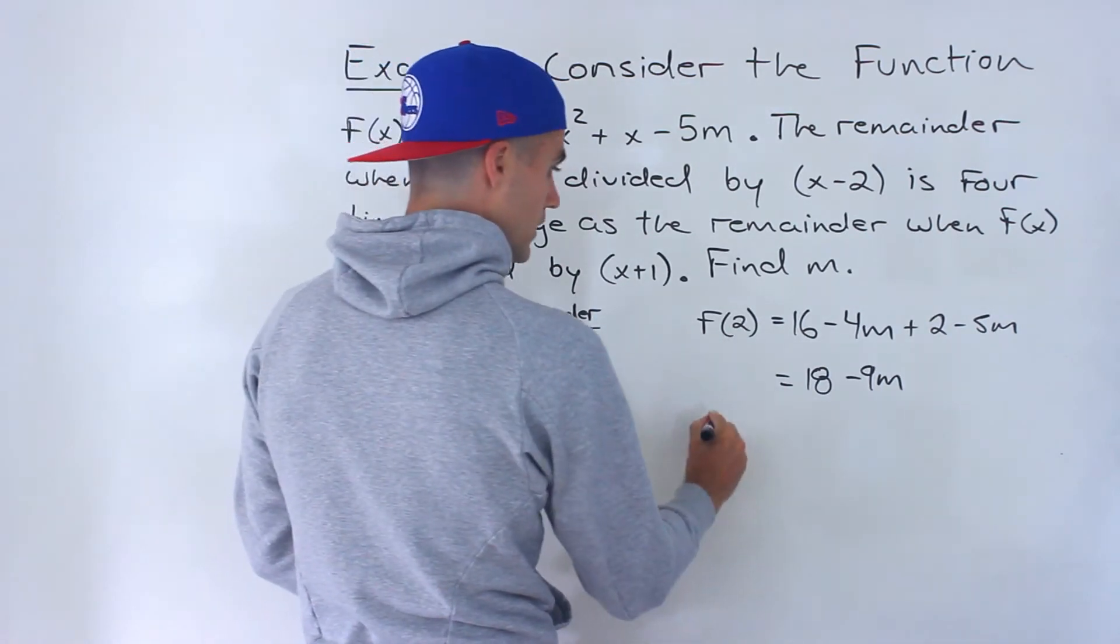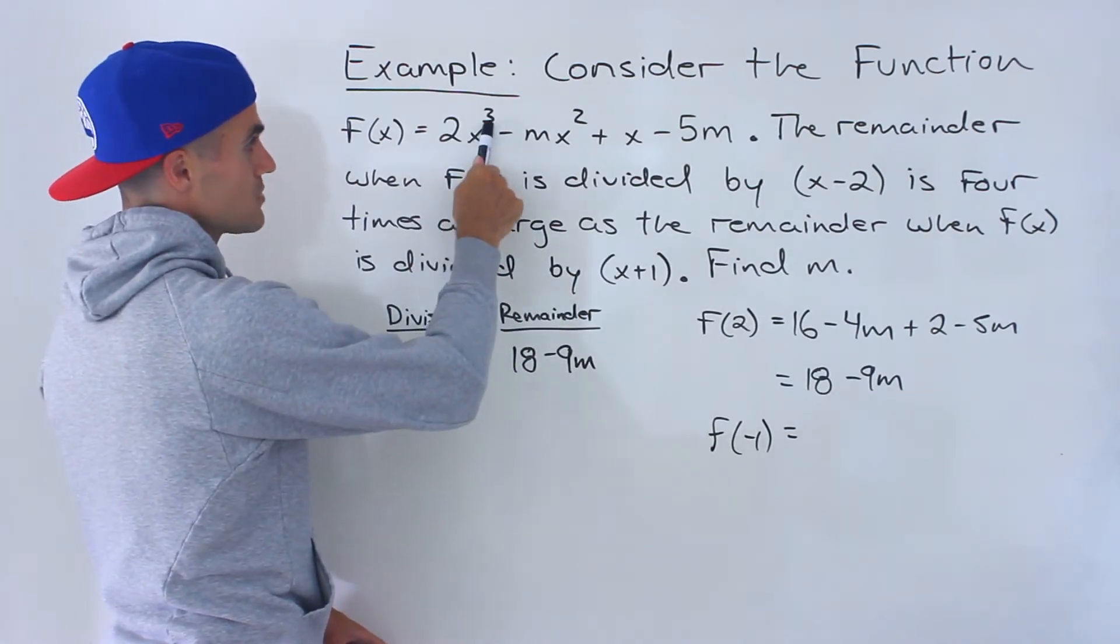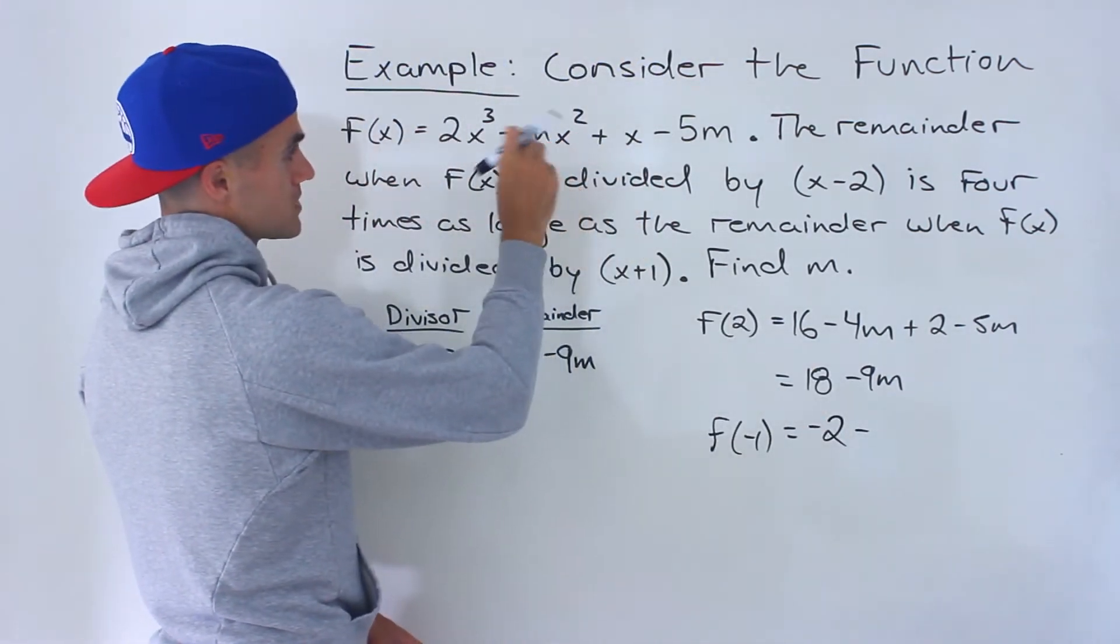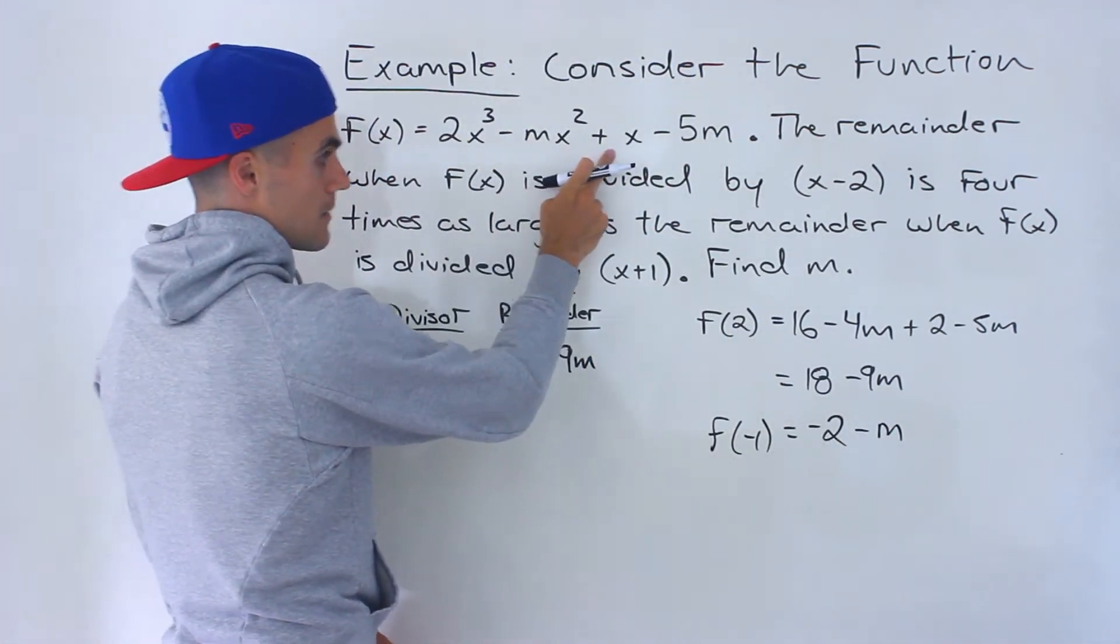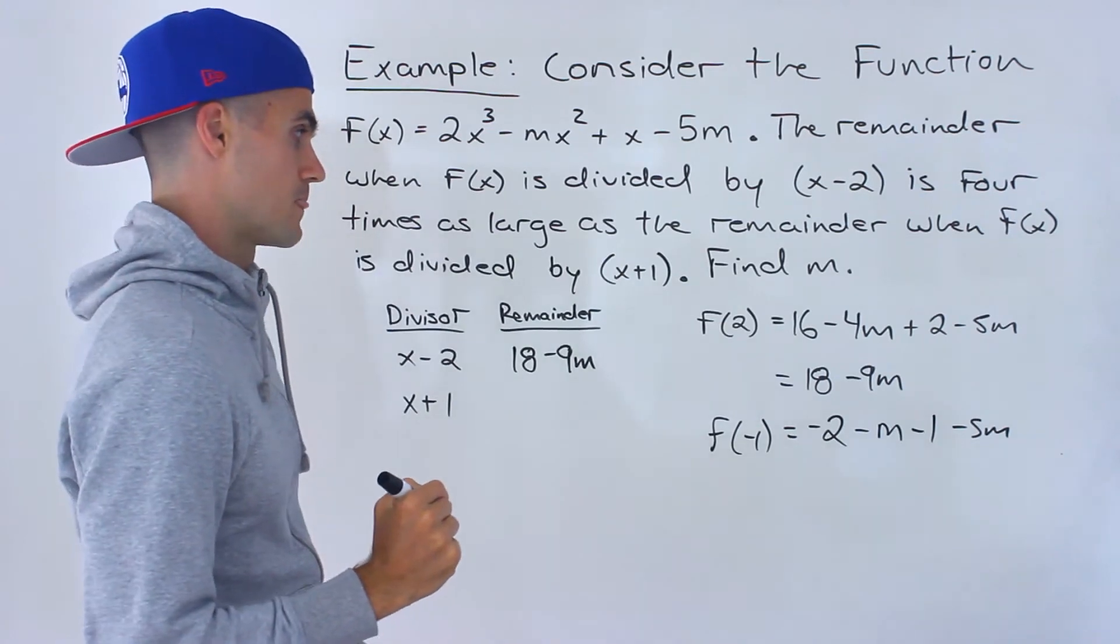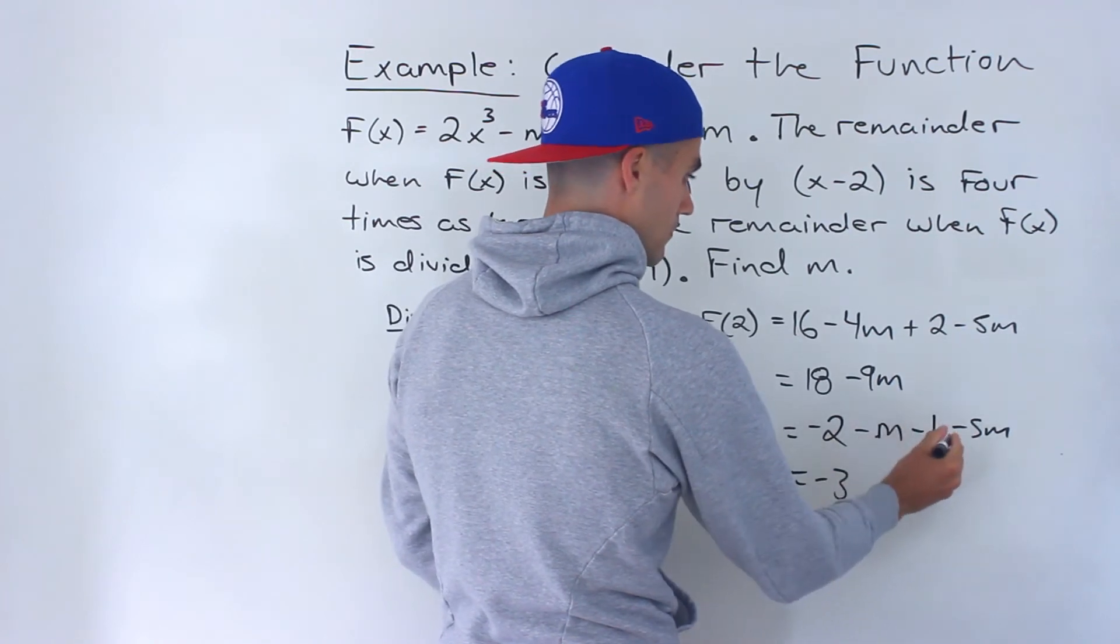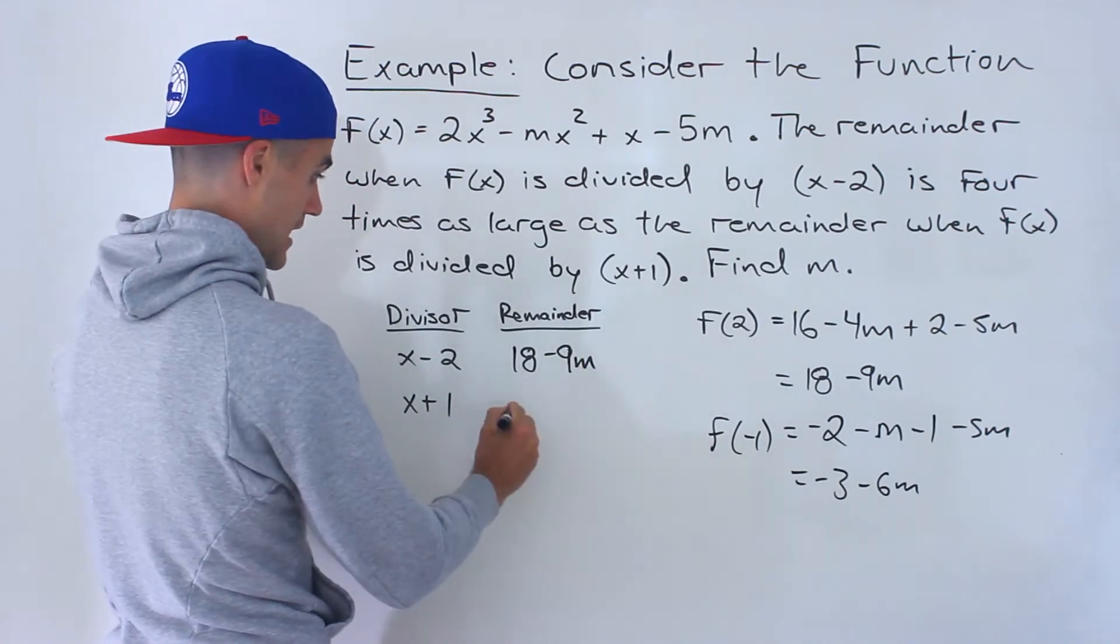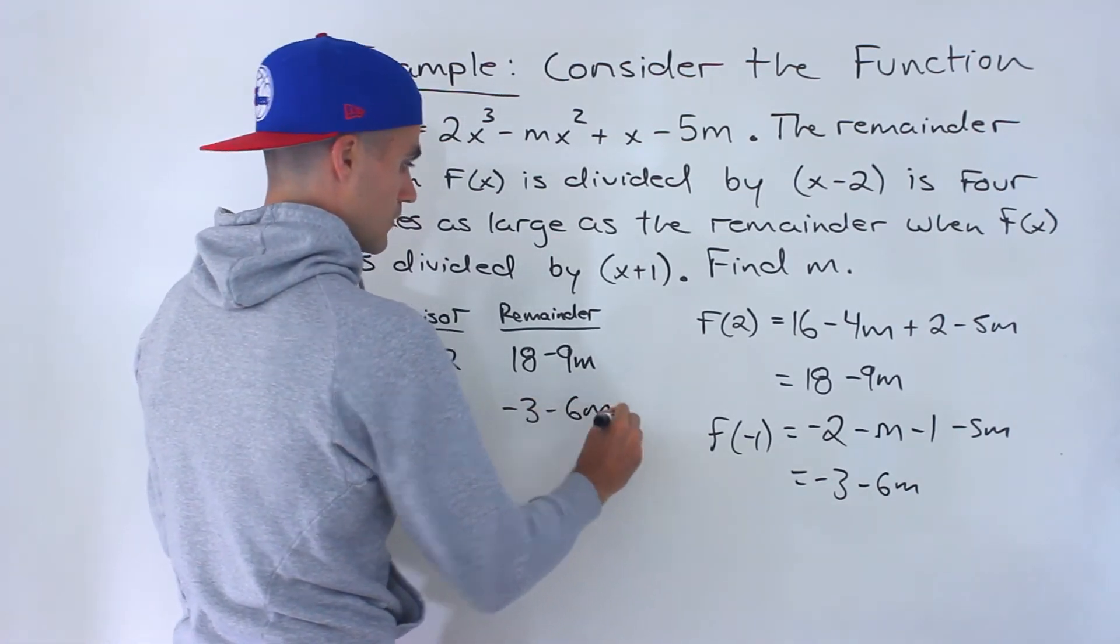If divided by x plus 1, the remainder is f(-1). We plug in -1 for all x values: (-1)³ is -1 times 2 is -2, minus (-1)² which is 1 times m gives minus m, minus 1, minus 5m. Simplifying, -2 minus 1 is -3, minus m minus 5m gives -3 - 6m. So the remainder when f(x) is divided by (x+1) is -3 - 6m.